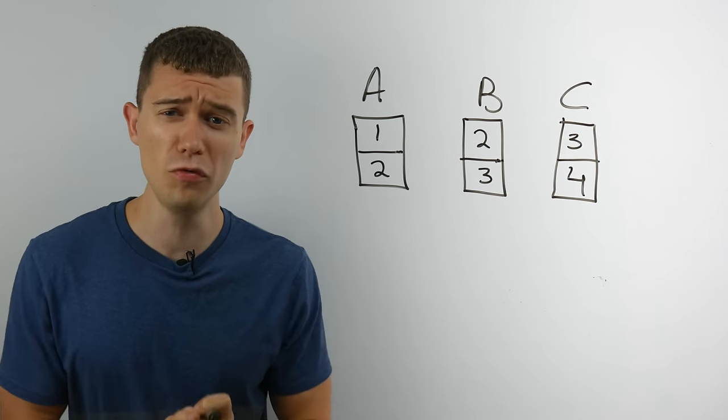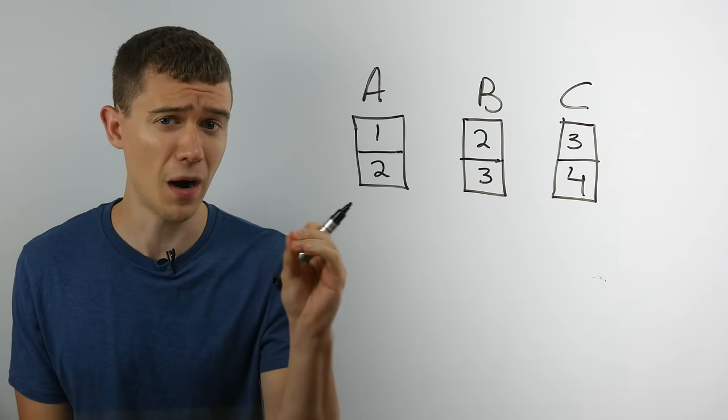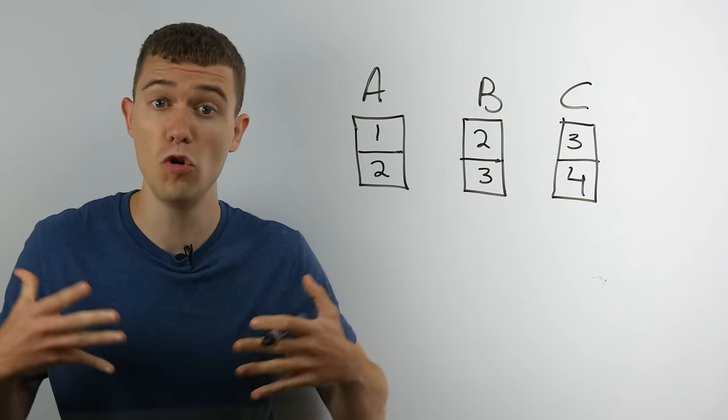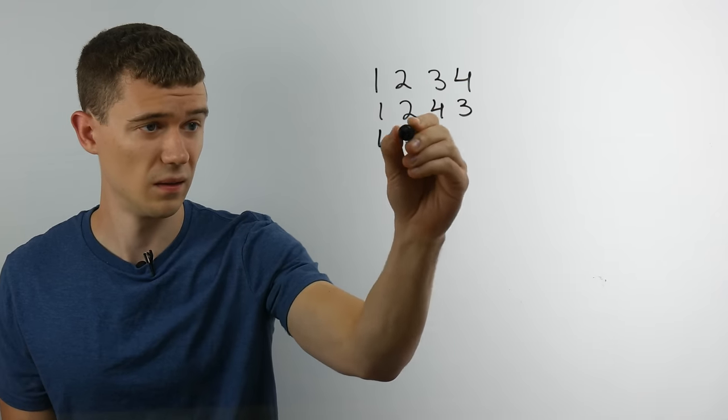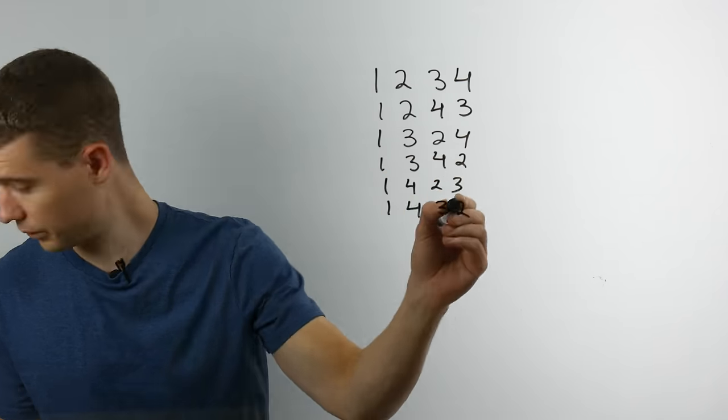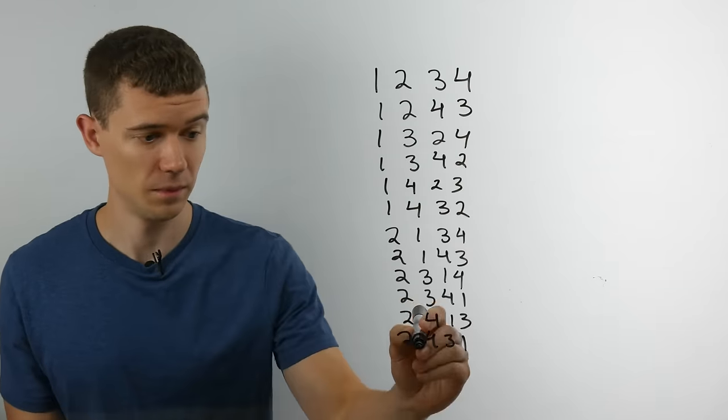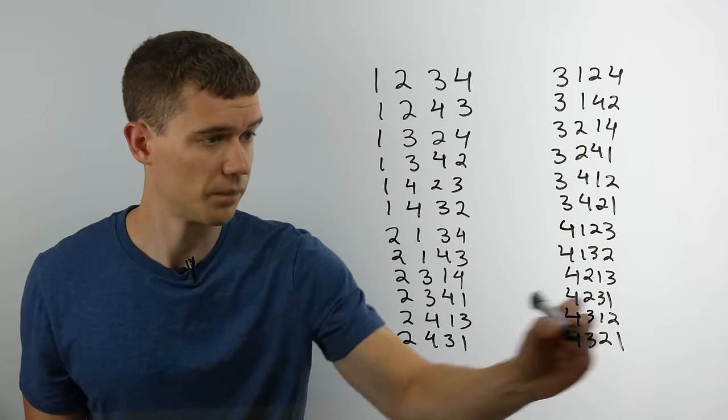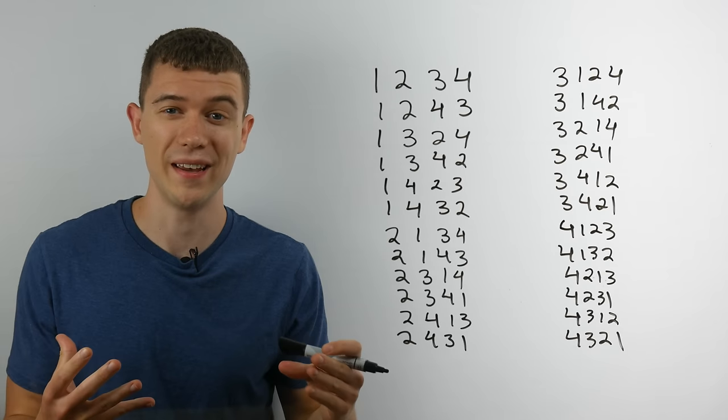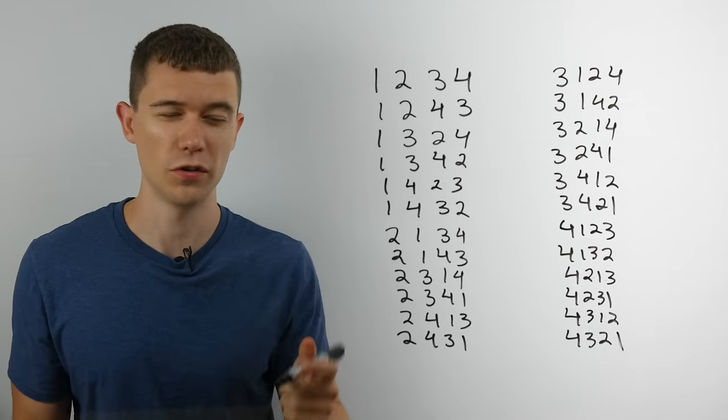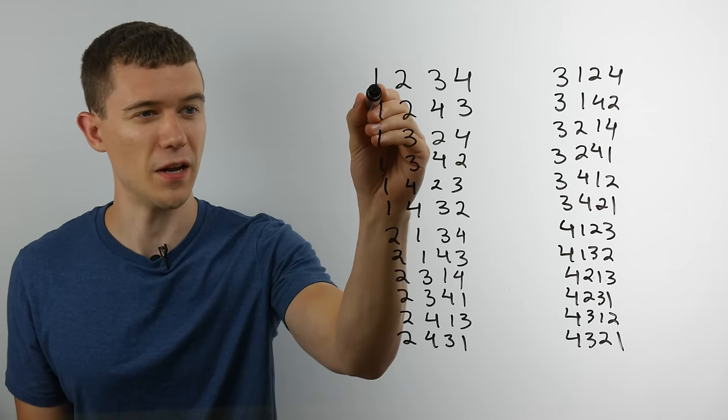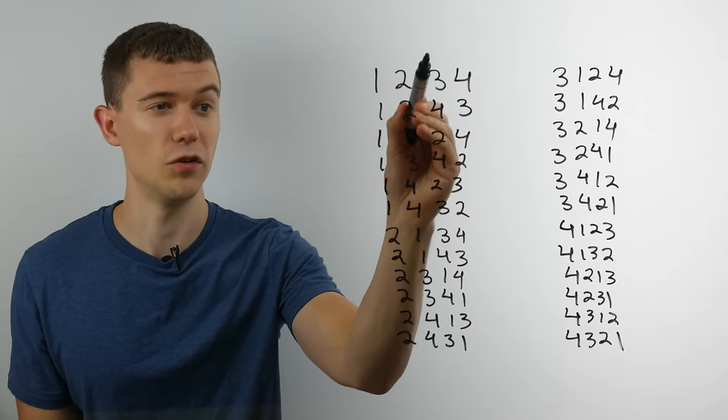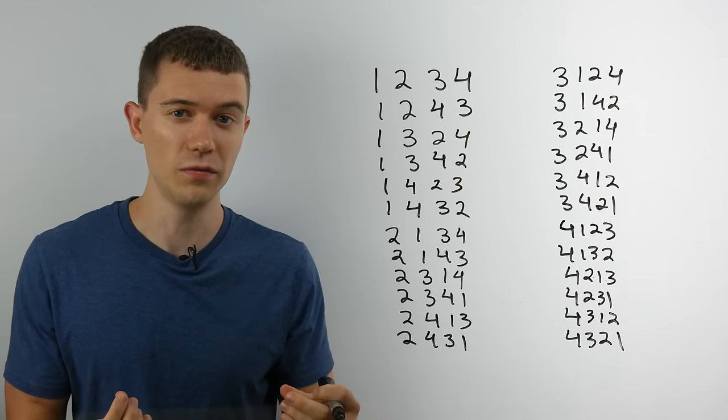Now just to really mathematically prove this to you, let's look at every single possibility that the numbers one through four can be drawn in order. So here I've listed every single way that the four numbers can be drawn in order. So I'm going to read each of these, imagining left to right, that's the order that I've drawn them in. So in this first one, I would draw one first, then two, then three, then four.